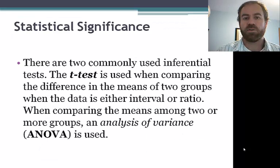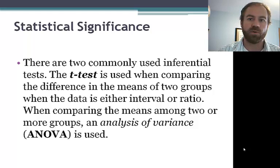There are two commonly used inferential tests. The t-test is used when we're comparing the difference in the means of two groups, when the data is either interval or ratio. If we're comparing means among more than two groups, or two or more groups, then we use an analysis of variance, or an ANOVA test.